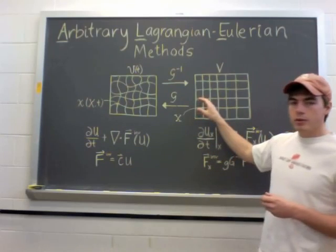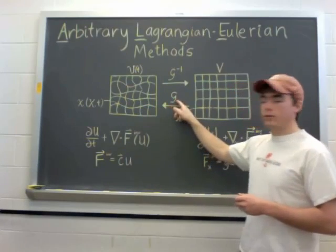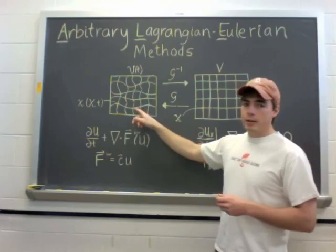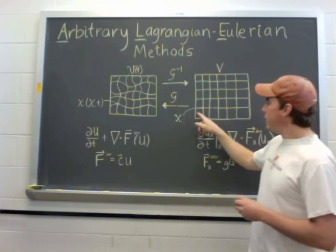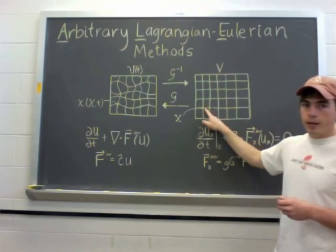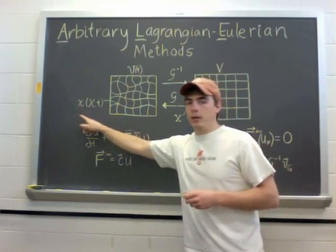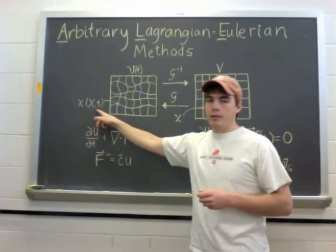So to do that, we need to introduce a mapping from the reference domain to the physical domain, and that's this mapping G. And because the physical domain depends on time, G will also depend on time. So you can see if we have a point in the reference domain, X, it maps to a point in the physical domain, little x, which is dependent on big X and on time.